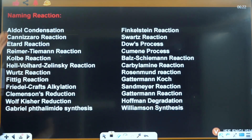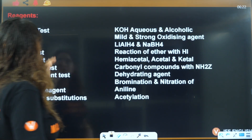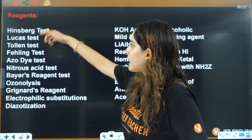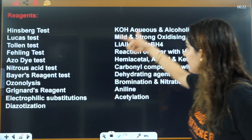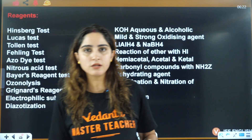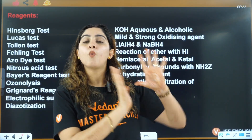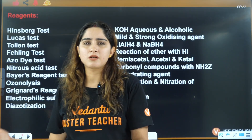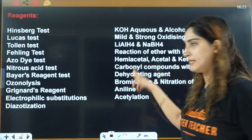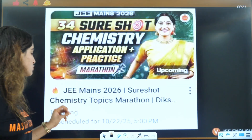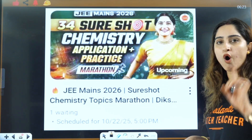I've also made a list of top naming reactions and important reagents from organic chemistry. Organic chemistry is divided into two categories: reactions with a specific name, and reactions without a name but with important reagents. All of this I'm going to teach you in the marathon taking place on 22nd October at 5 PM.